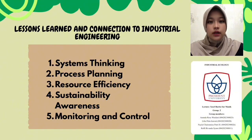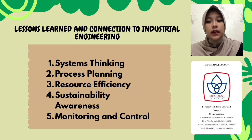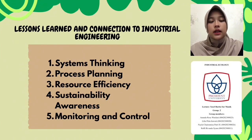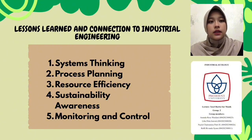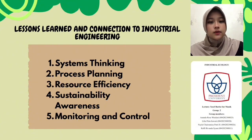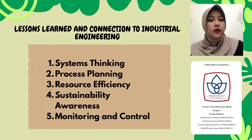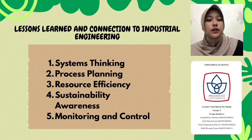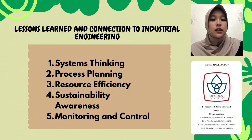Fourth, sustainability awareness — a terrarium is a clear example of a self-sustaining system that relies on natural cycles, supporting the growing emphasis on sustainable production methods in industrial engineering and designing systems that are environmentally friendly and reduce long-term environmental impact. Fifth, monitoring and control — to keep a terrarium healthy, regular monitoring and adjustments are necessary, such as checking humidity, light exposure, or plant conditions. This is similar to quality control and continuous improvement practiced in industrial processes, where systems must be observed, evaluated, and improved continuously.